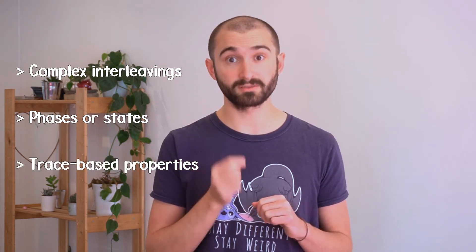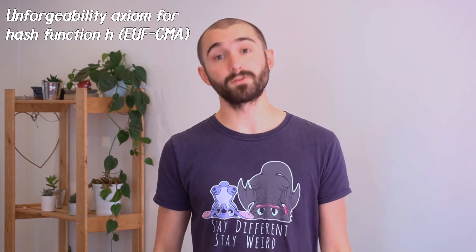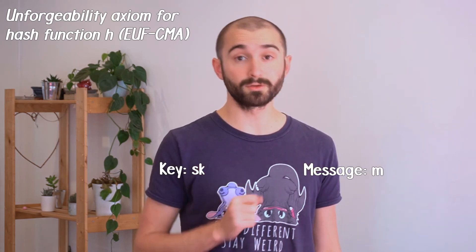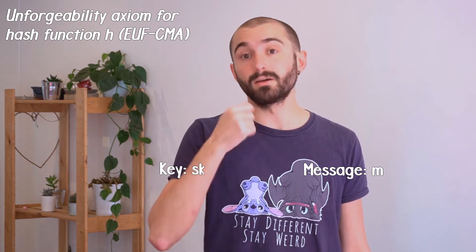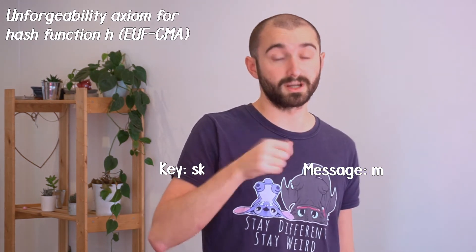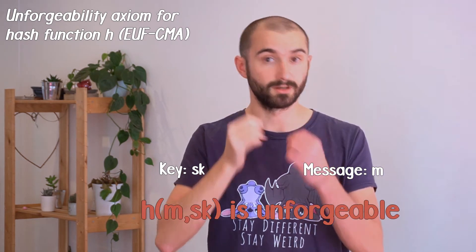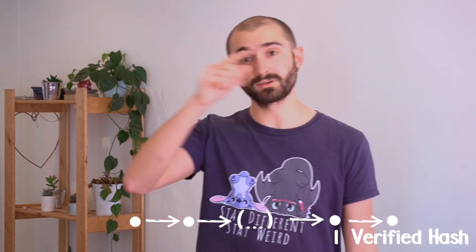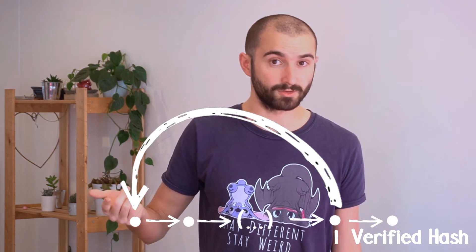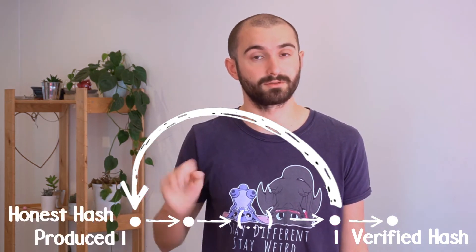To give an example on the last point, let us look at the unforgeability axiom of a keyed hash function. It is a function that, given a message and a key, allows you to authenticate this message to other people. Only somebody with the key can produce the hash of a message with this key. It is unforgeable. This property can be expressed as the property of all possible executions of the protocol. Given a possible execution, whenever you successfully verify your hash, you know that there exists, previously, somewhere in the trace, a point where this hash was honestly produced.